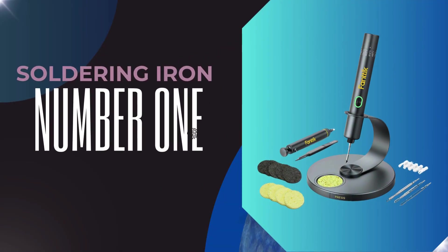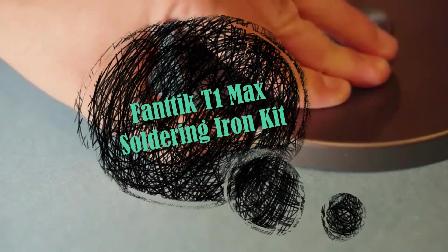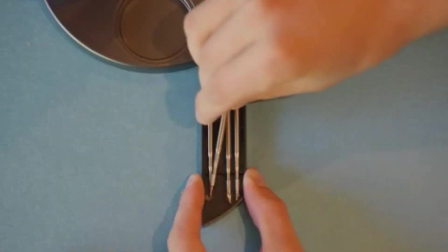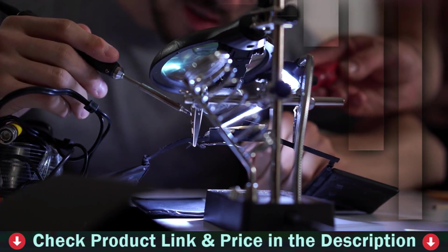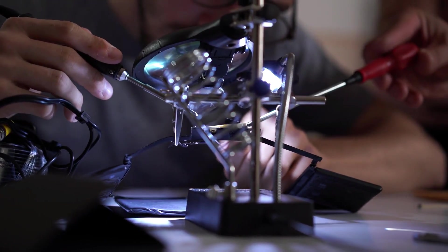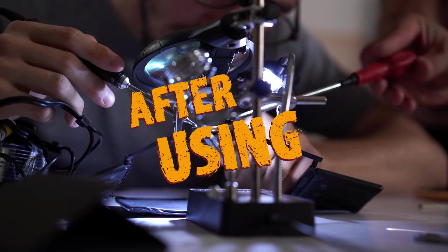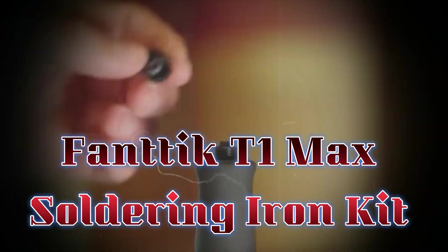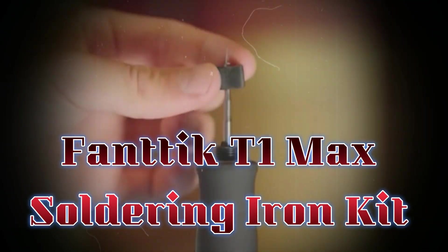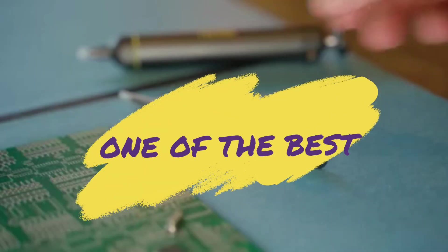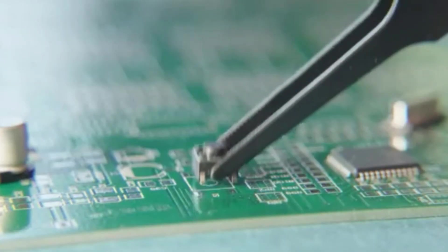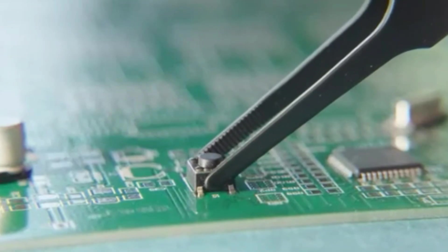Our number one pick is FANTIC T1 MAX Soldering Iron Kit. If you're into electronics, hobby projects, or small-scale repairs, a reliable soldering iron is a must-have. After using the FANTIC T1 MAX Soldering Iron Kit, I can confidently say it's one of the best portable, cordless soldering tools available today, especially for precision work.